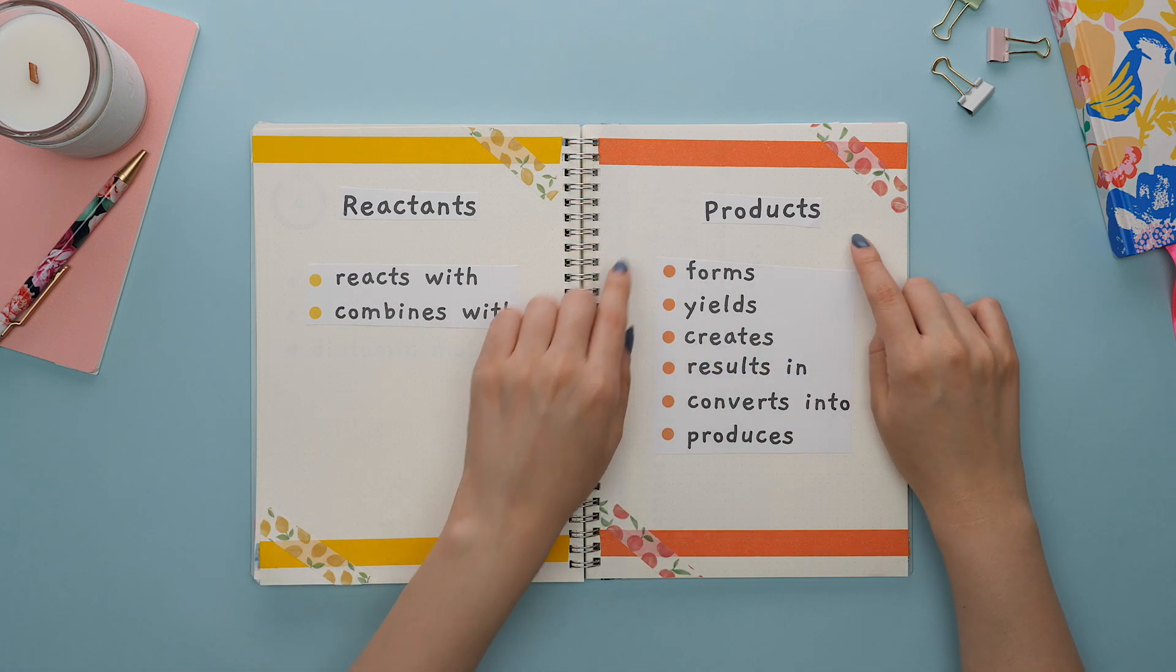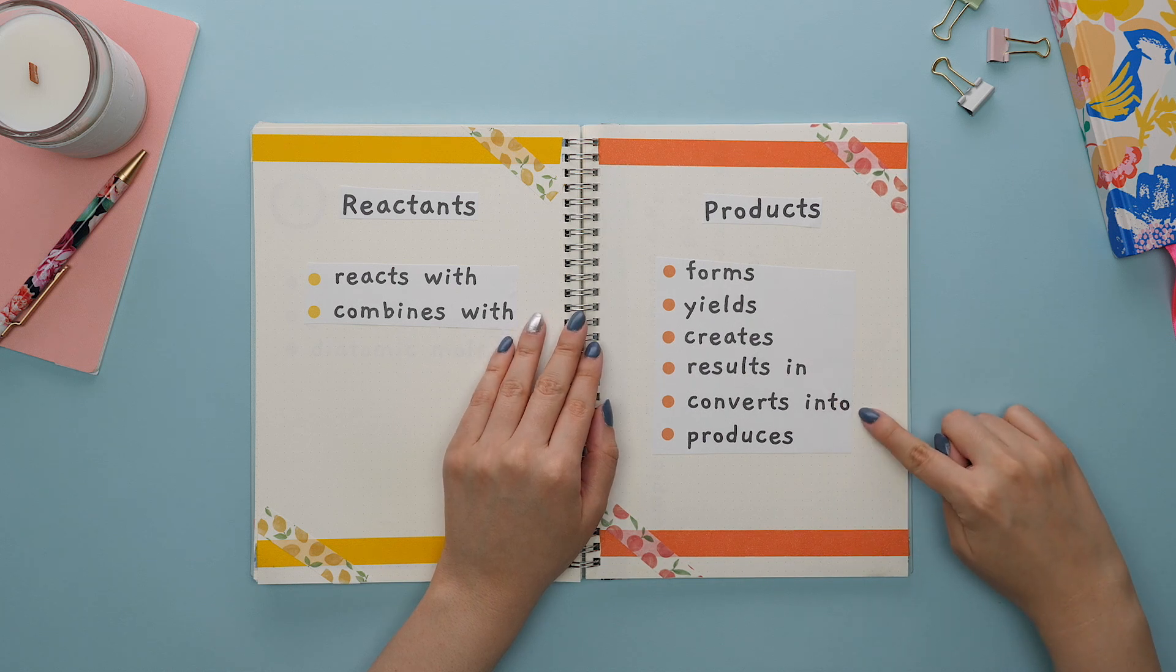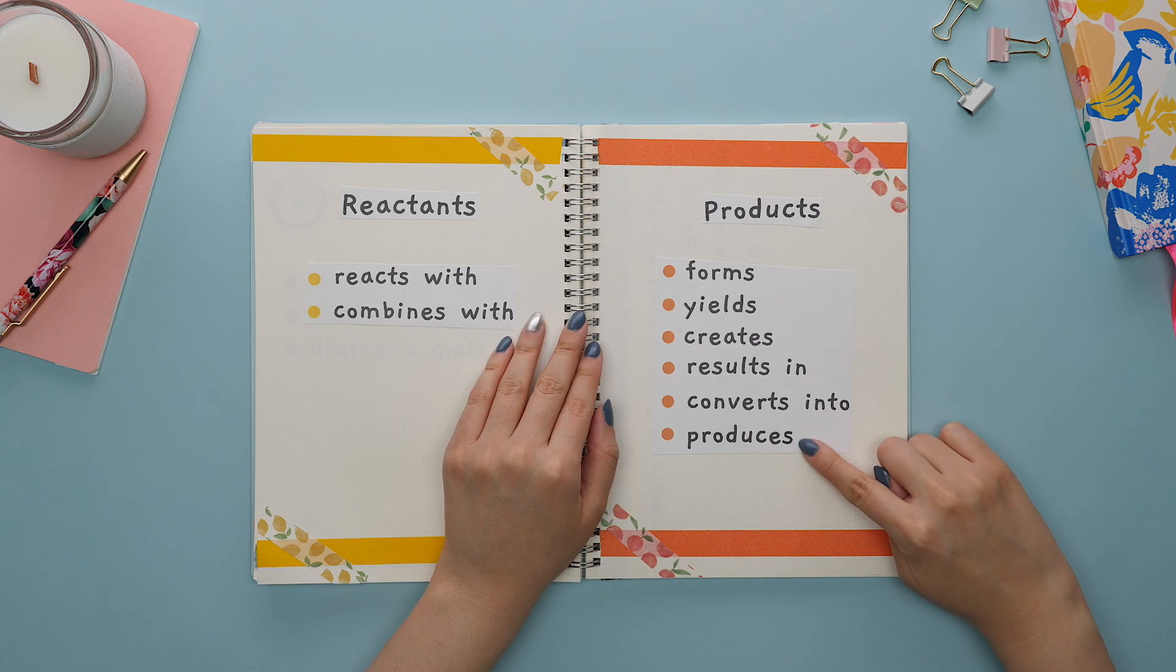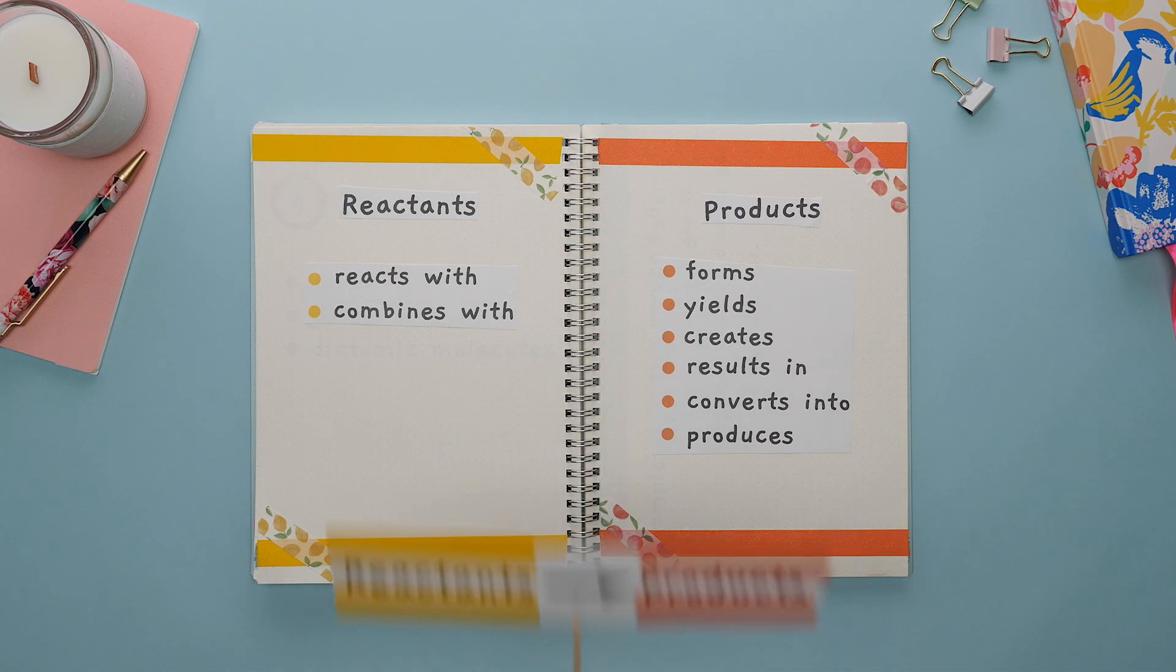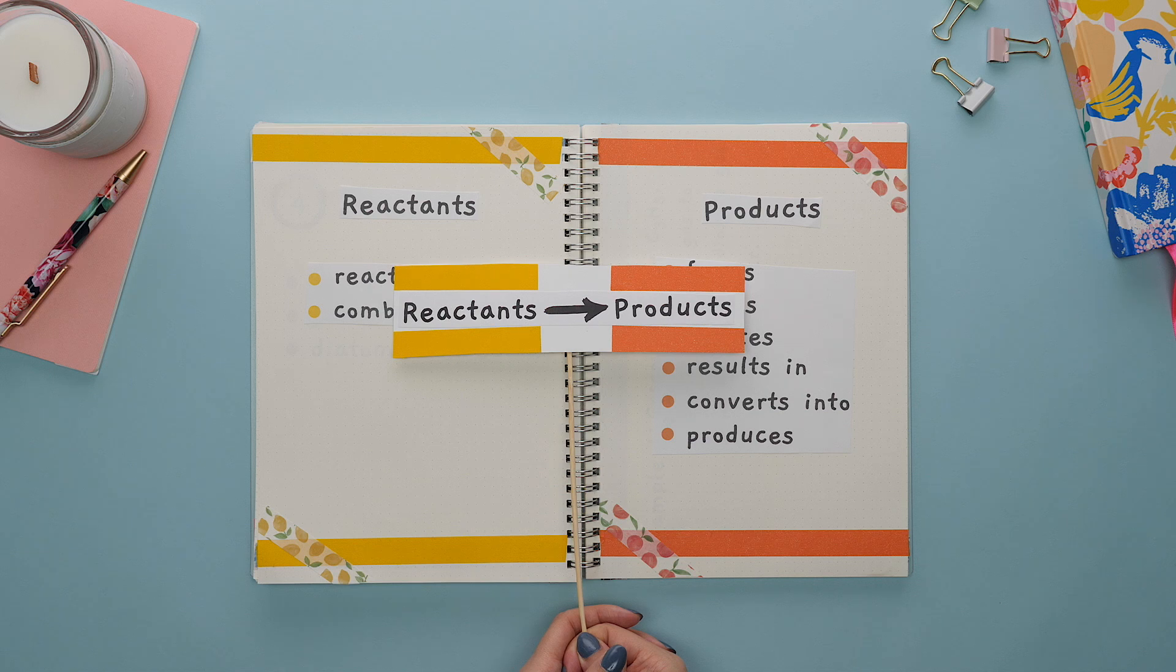The keywords for your products are these: forms, yield, creates, results in, converts into, or the most common one is produces. Also note that your reactants are on the left side of the arrow, while the products are on the right side of the arrow.